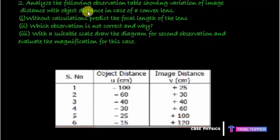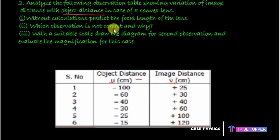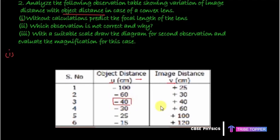The next question says: analyze the following observation table showing variation of image distance with object distance. We are given a table where one column shows object distance u and the other shows image distance v. The first part asks us to predict the focal length of the lens without calculations.